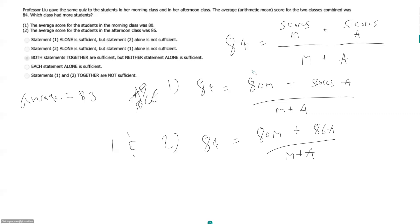Now we can't solve for anything really here. But let's say we were to just simplify this equation. So multiply each side here by M plus A. So you get 84 times M plus A is equal to 80M plus 86A. So if we distribute this, we get 84M plus 84A is equal to 80M plus 86A.